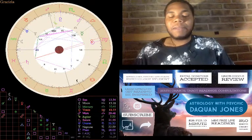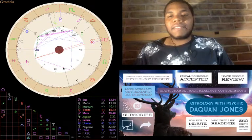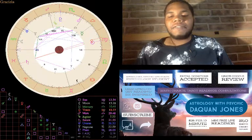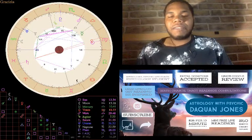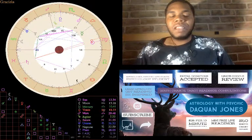But again, this is a very great position to have Venus conjunct the Sun in the 7th house. There is this emphasis and focus on partnerships and relationships.